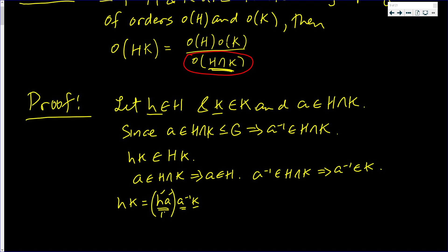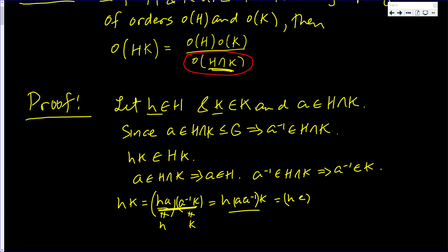Now, there's no reason, unless a is e, why h times a should equal h. Likewise, there's absolutely no reason why a inverse k should equal k. But the product still equals hk. This is just playing the associative law game — it's the same as h times e times k, which is hk, like I said it was.